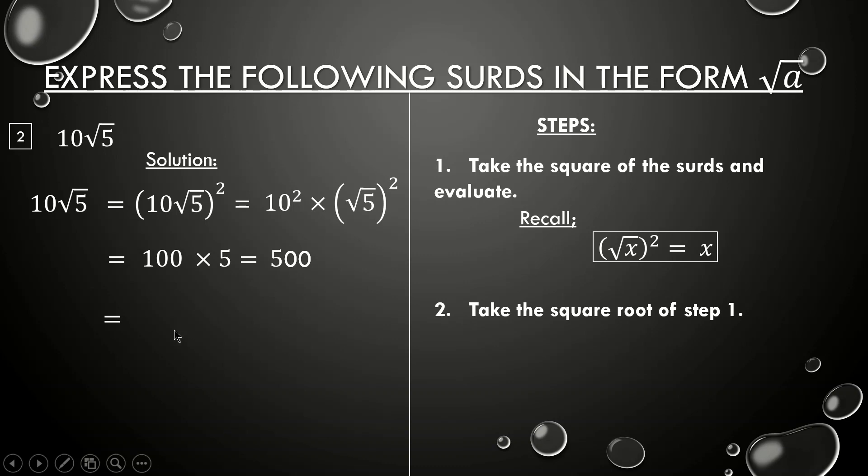The last step is to take the square root of step 1, and that becomes √500. This is our final answer. As you can see I just converted 10√5 to a single surd. So when you are asked to express surds in the form of √a, it means that you are asked to express that surd in a single form. So this is how we express surds in a single form.